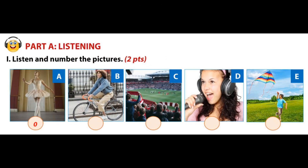Progress test, Unit 7. Part one: listen and number the pictures. For example, number zero: she's dancing. Can you see the number zero? Now you listen and number the pictures. Number one: she's singing. Number two: they're watching a match. Number three: he's flying a kite. Number four: she's riding a bike.